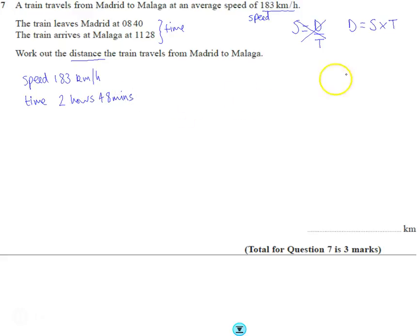Now, we've got to be careful when we're using our speed, distance, and time calculations. We've got to be consistent. So this is in kilometres and hours, and at the moment we've got hours and minutes, and we need to convert this into hours only.